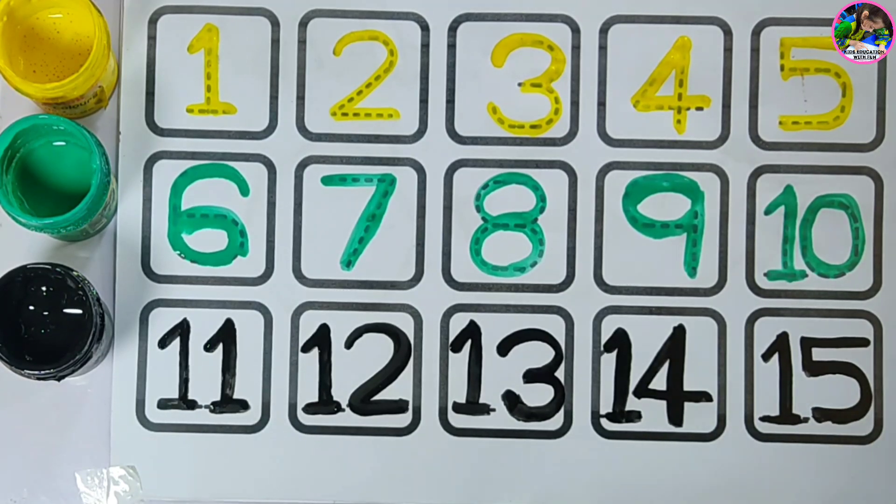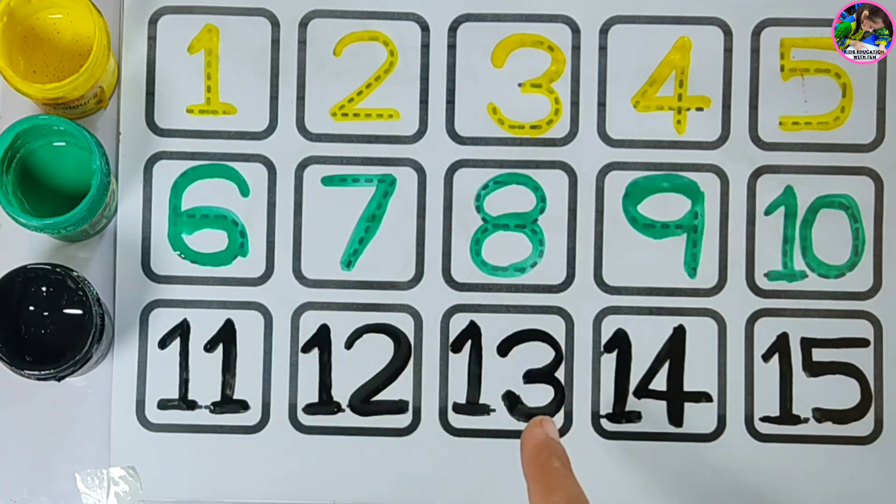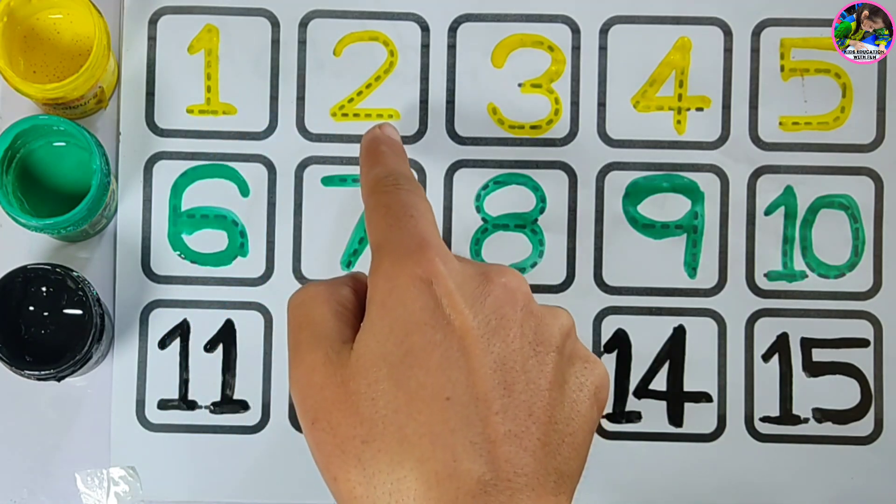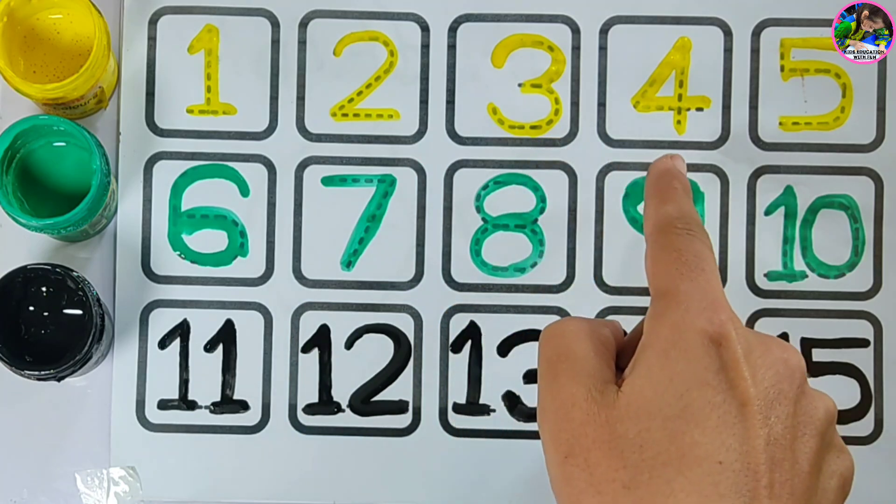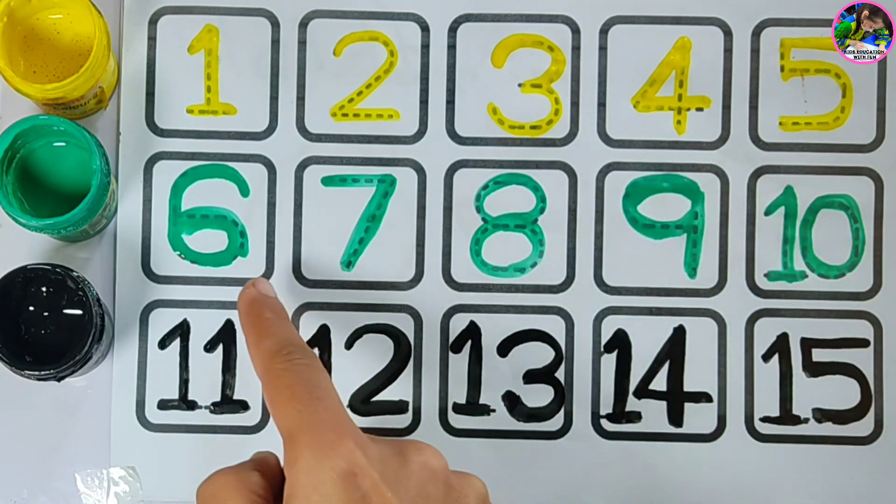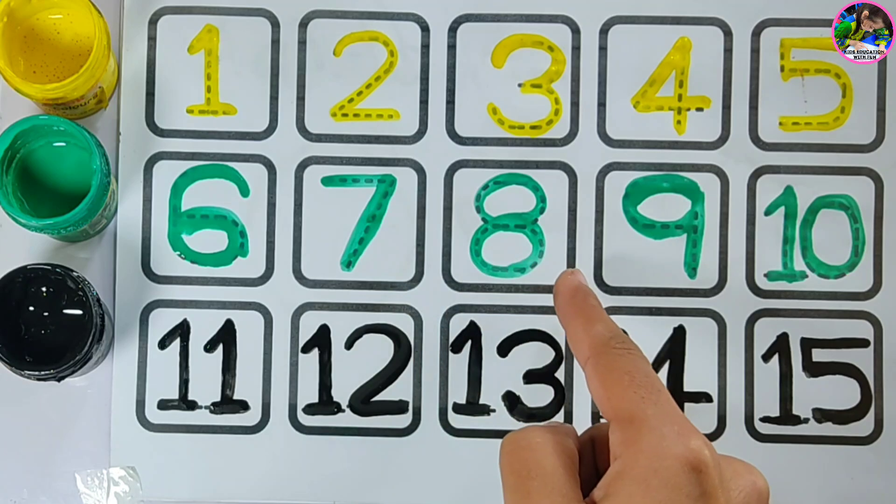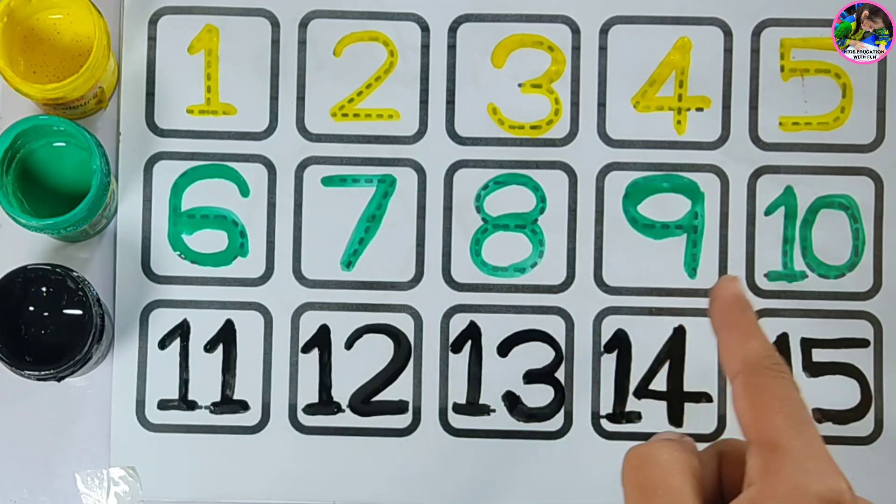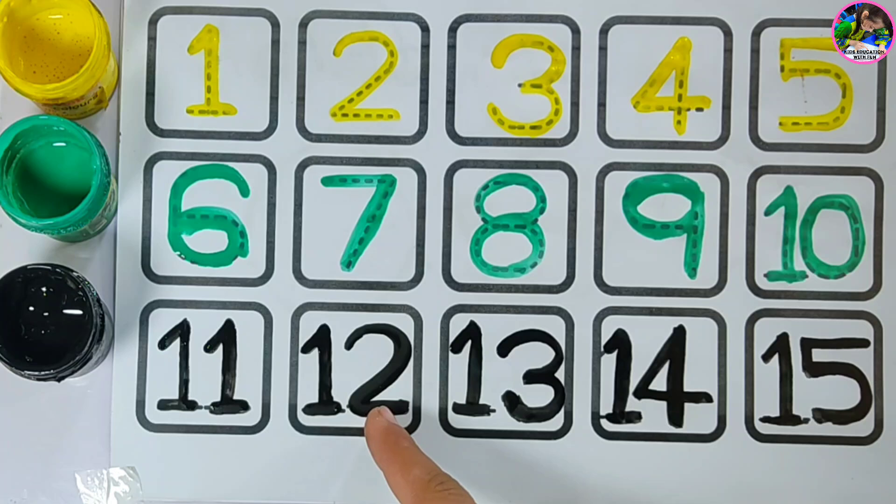We have done. We just used three different colors: yellow, green, black, from number one to fifteen. Let's revise: one, two, three, four, five, six, seven, eight, nine, ten, eleven, twelve, thirteen, fourteen, fifteen.